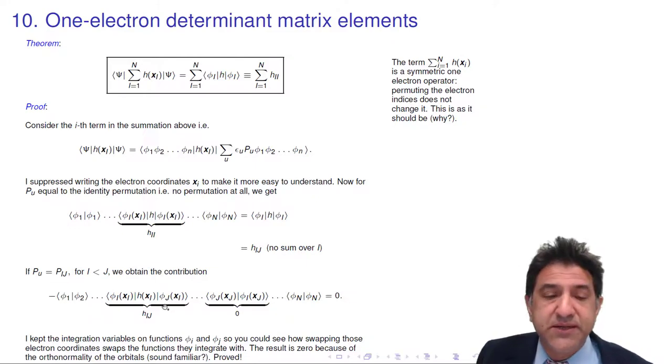the function phi j x j, what used to be that, now becomes phi j xi. And we have to integrate that over the same integration variable xi. And that will give you phi i h phi j, which is h i j. That's the matrix element h i j.